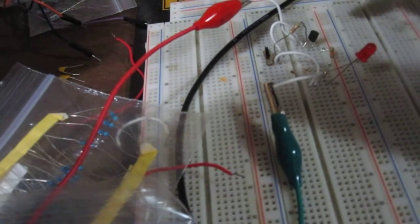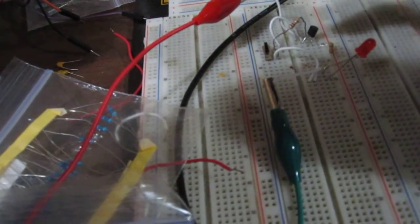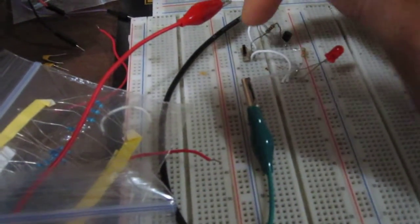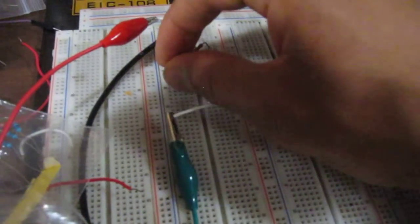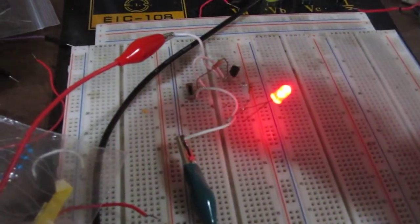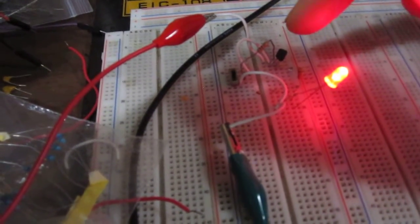When the base is hooked up to positive voltage and when it's hooked up to ground. Right now it's hooked up to positive voltage, this is why the LED is off. So if I switch this switch, you can see now the LED is fully on.